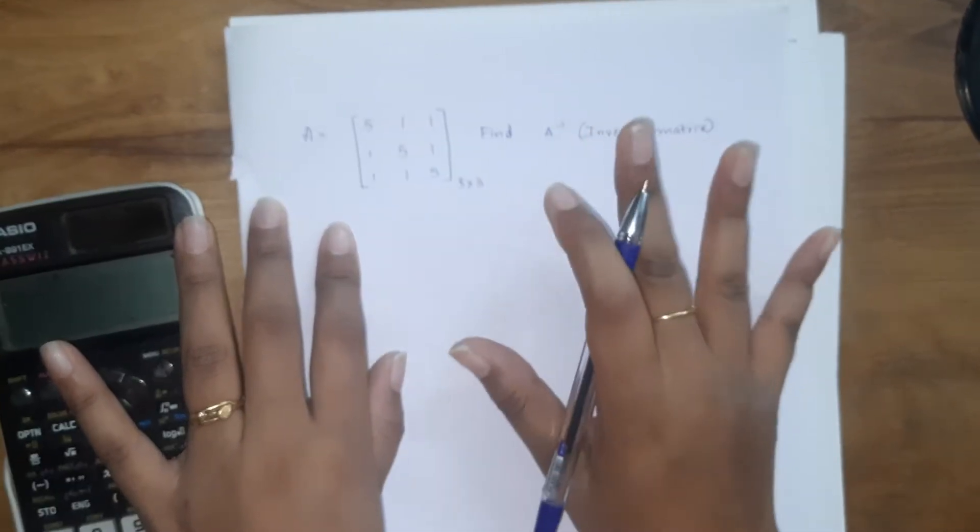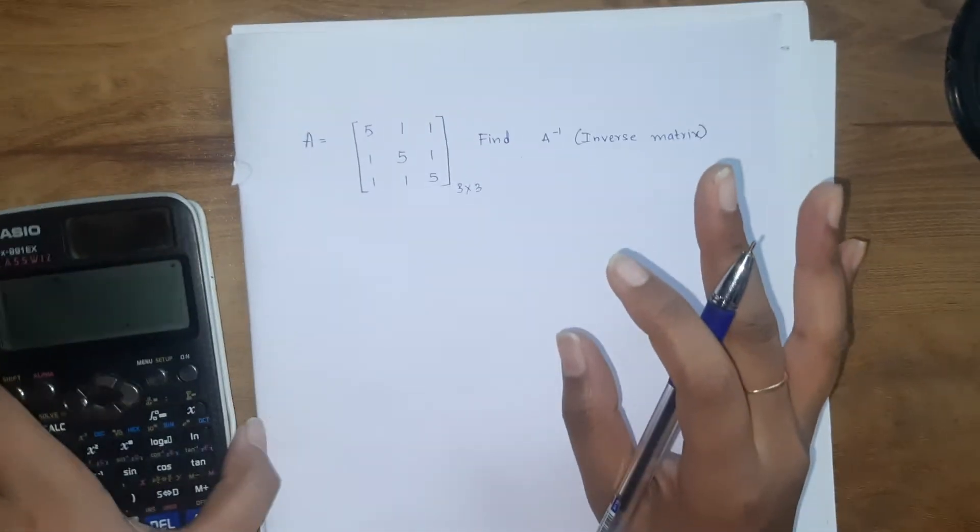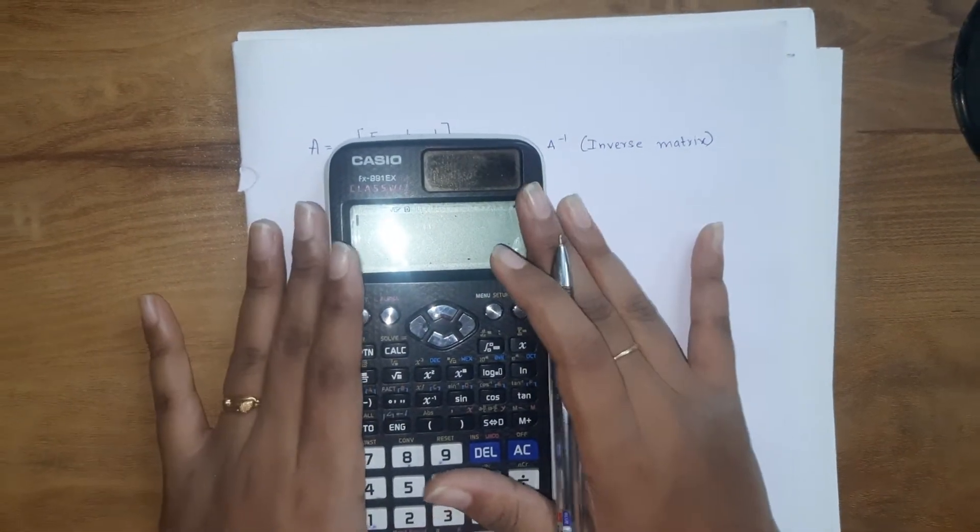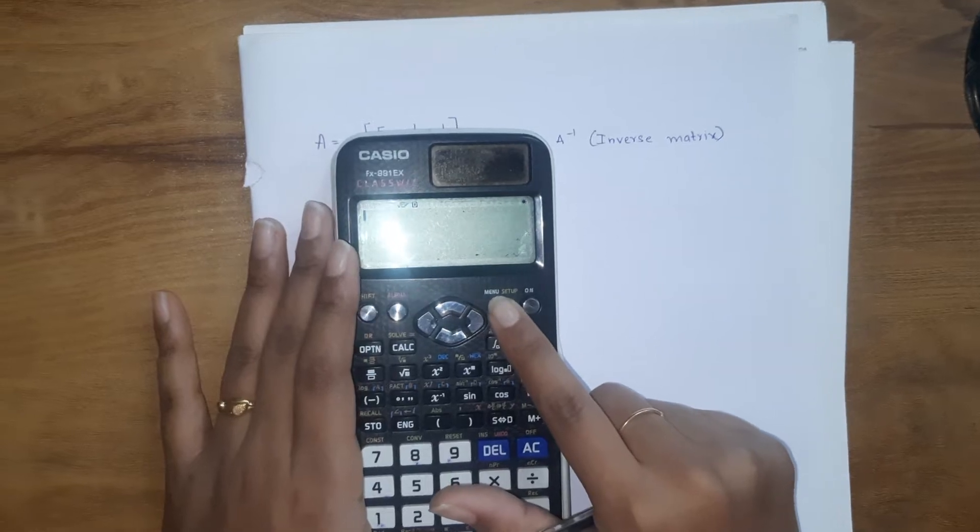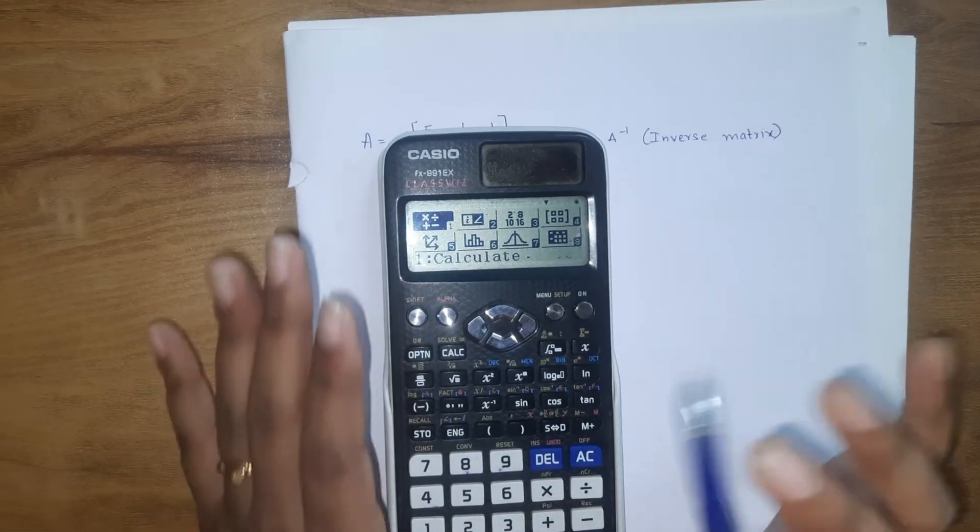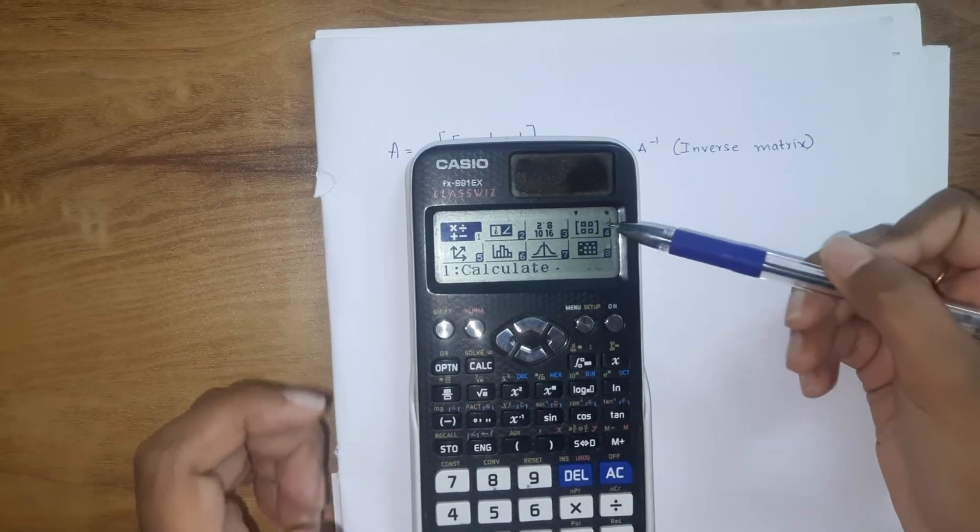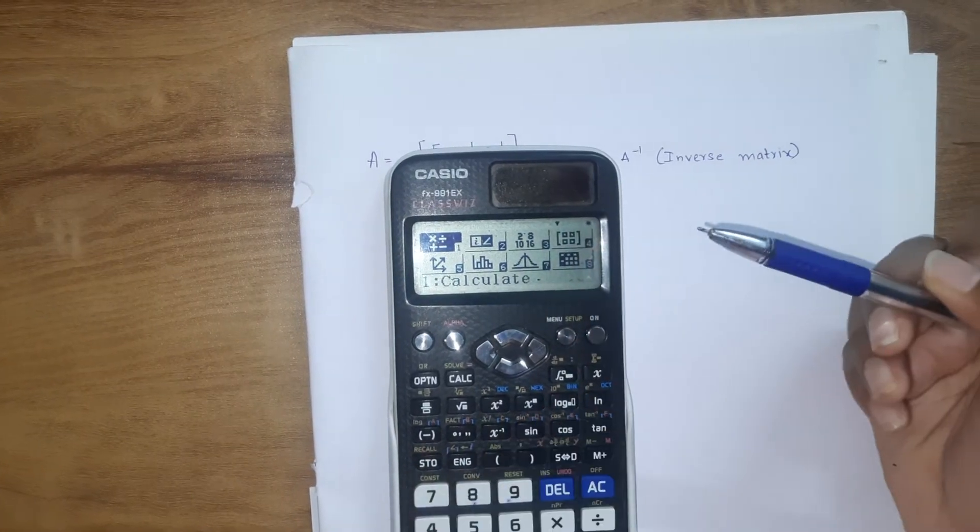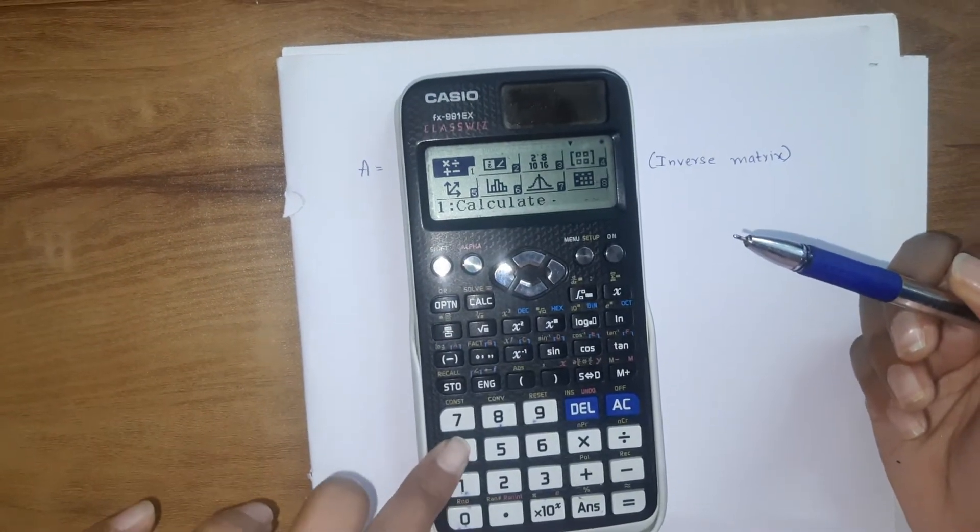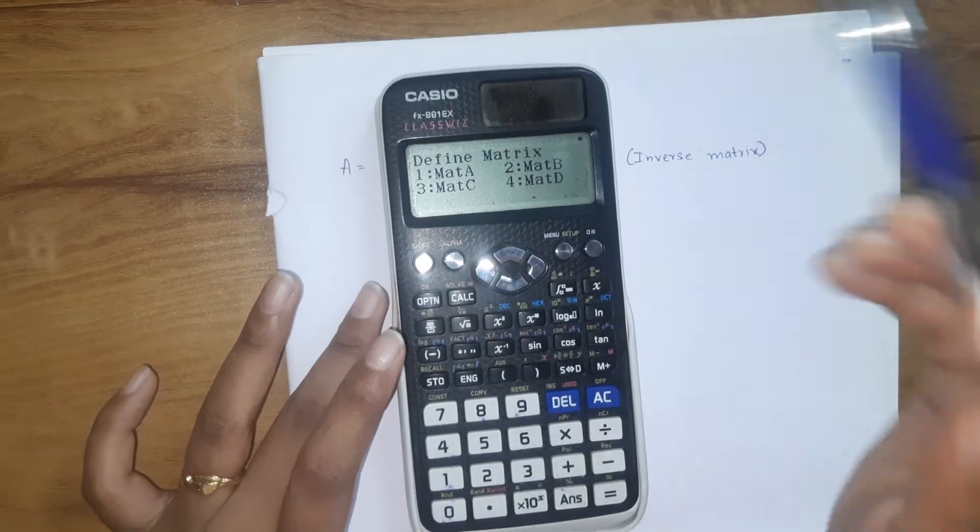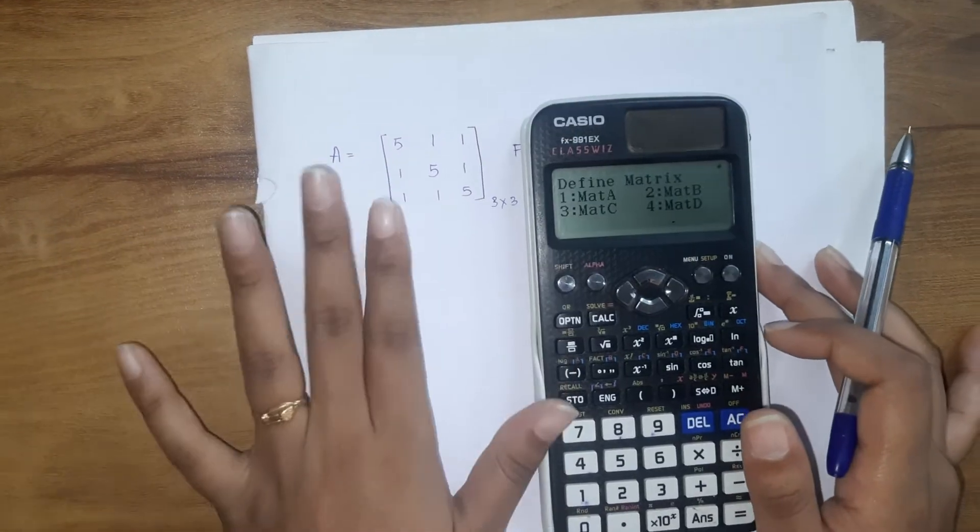Now we have to find the inverse of it. It's very simple, so let's begin. Take out your calculator and go to menu setup. This is matrix calculation, so this is the fourth option. Click on 4. Now we need to define our matrix. Our matrix is A, we're going to define it.